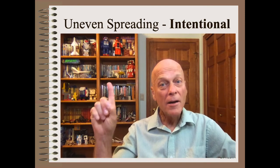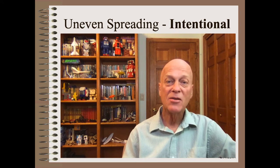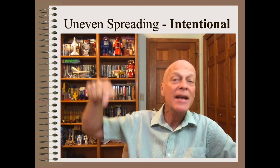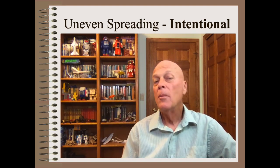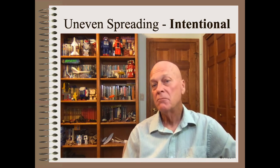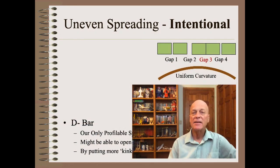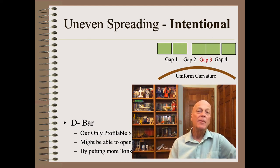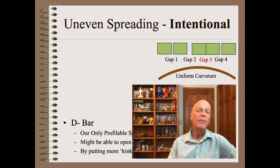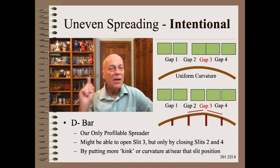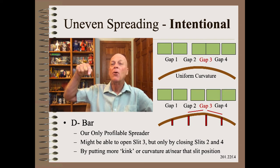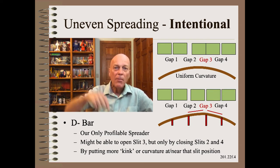There is one profilable spreader. By that, I mean a spreader that is capable of targeting more spreading in one CD location and/or less in another CD location. We might use that capability for uneven spreading to counter, for example, an uneven web. As seen in the top figure, gap 2 is wide and gap 3 is narrow or non-existent. This might be due, for example, to a baggy lane as we saw in the last slide. This happens even with uniform curvature of the spreader. The unique feature of the D-bar is that it can put more spreading into gap 3 by putting more curvature there and less into gap 2 by putting less curvature there.